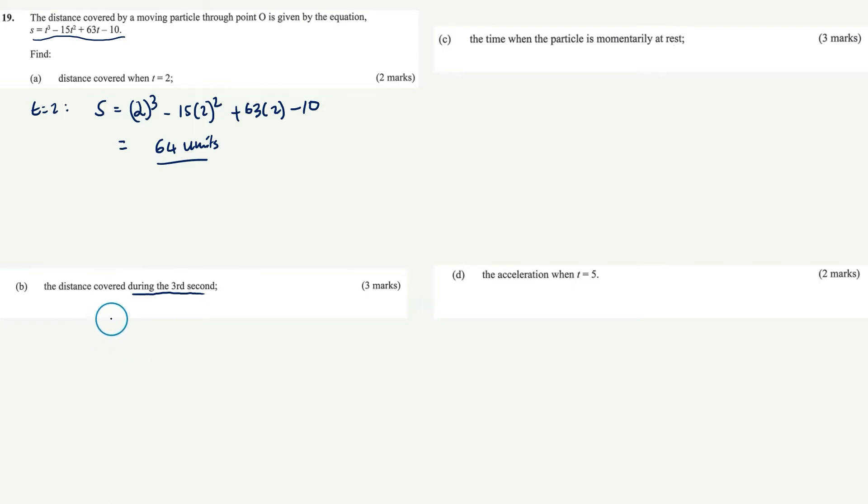We need to find s when t is equal to 3. So s is going to be 3 cube minus 15 times 3 squared plus 63 times 3 minus 10. If you work this out, you will get 71 units.